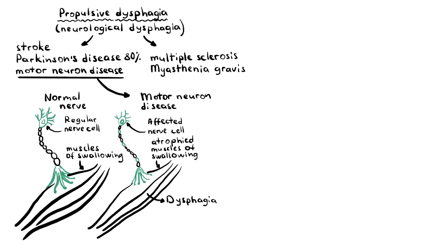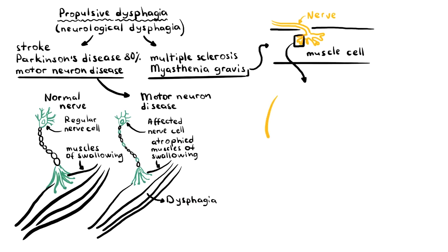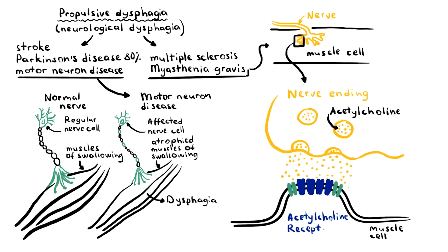Dysphagia has been reported to be the only presenting complaint for myasthenia gravis, especially in the elderly. Myasthenia gravis is an autoimmune disease. Normally nerves release the neurotransmitter acetylcholine, which binds to acetylcholine receptors on muscle cells, resulting in muscle contraction. In myasthenia gravis, autoantibodies bind to acetylcholine receptors or MuSK, an enzyme important in neuromuscular junction development, resulting in less transmission of nerve impulses and muscle weakness. A clinical pearl: myasthenia gravis has a strong association with thymoma, so a structural or propulsive etiology may contribute to dysphagia in these patients.